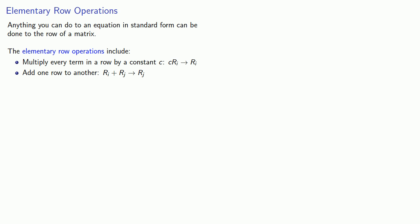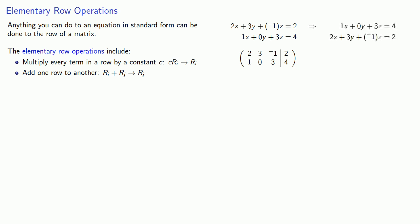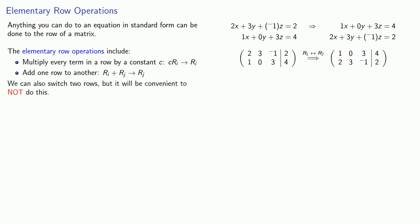Another thing we can do with a system of linear equations is change the order of the equations, which also changes the order of the rows in the augmented coefficient matrix. We would indicate this as switching row one and row two. However, for reasons that will become apparent later, it will be better if we don't do this — so while we can switch two rows, it will be convenient not to use this as an elementary row operation.